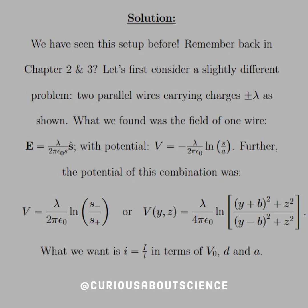And if we put that into a larger picture, we see that S minus was a separation distance. So, if we use Pythagorean Theorem, we see that this is equal to Y plus B squared plus Z squared, and then Y minus B squared plus Z squared. And so what we want is the current per unit length in terms of V naught, D, and A. And so that's why we write it as little i, not to be confused with imaginary.